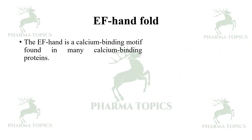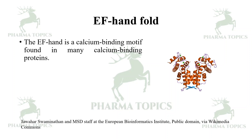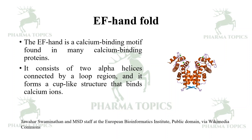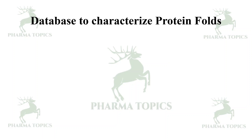The EF hand fold is a calcium-binding motif found in many calcium-binding proteins. It consists of two alpha helices connected by a loop region, forming a cup-like structure that binds calcium ions, as seen in proteins like calmodulin.